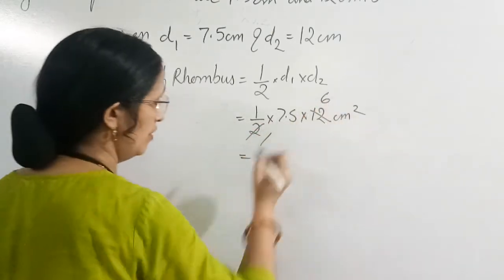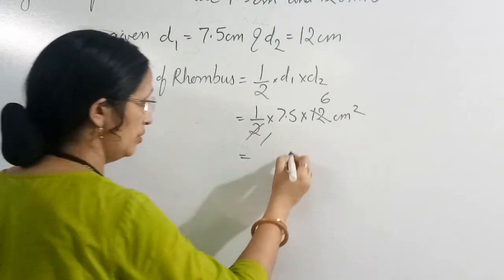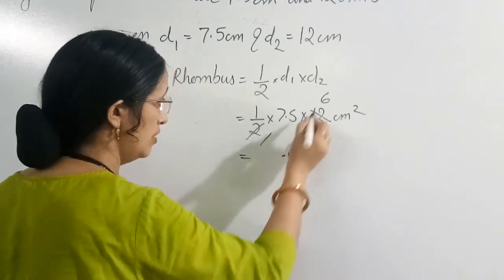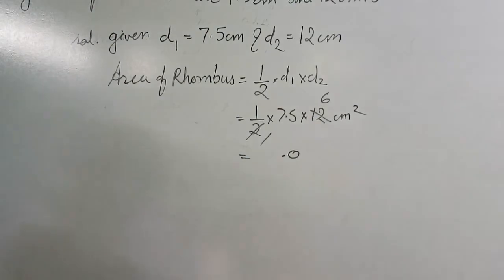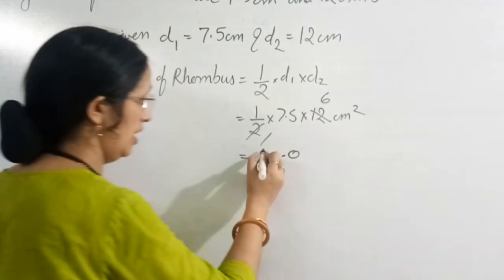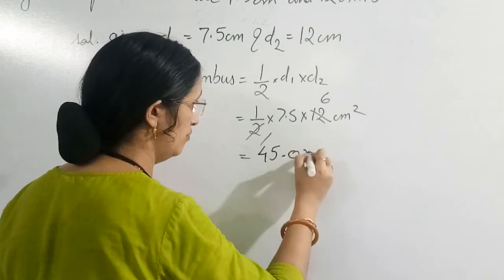6. Then 6 we will multiply by 5. And 7.5 into 6. 45 cm square.